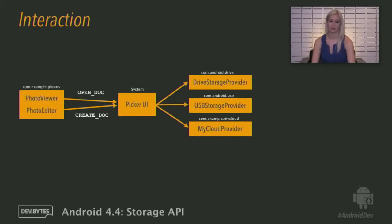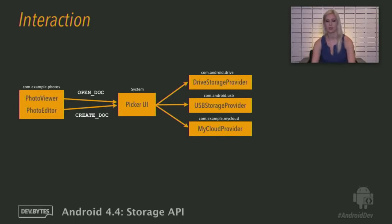Here's a quick picture of the flow. As you can see, providers and clients don't interact directly, just as before. A client requests permission to interact with files — read, edit, create, etc. The system picker goes to each registered provider and shows the user the matching content routes.